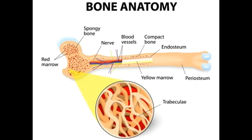Contradictory to its name, spongy bones are not soft. They are named so because they closely resemble a kitchen sponge. They are solid and hard, but when viewed under a microscope, are very similar to that of a honeycomb. In short, these bones are porous, but that doesn't mean they can be squished like a sponge.